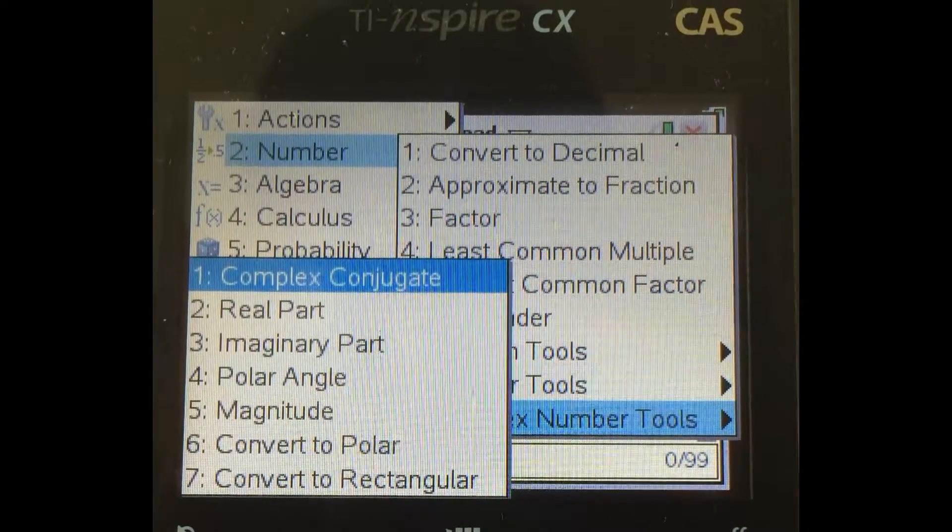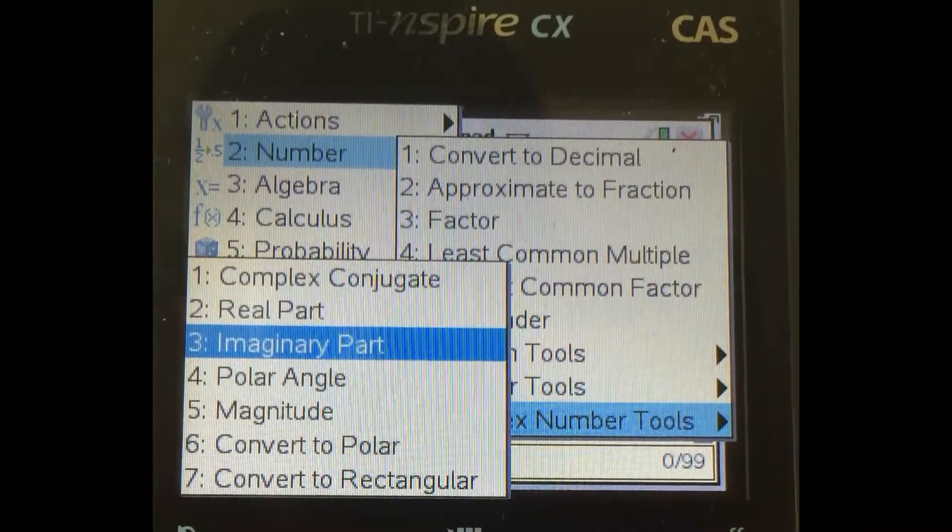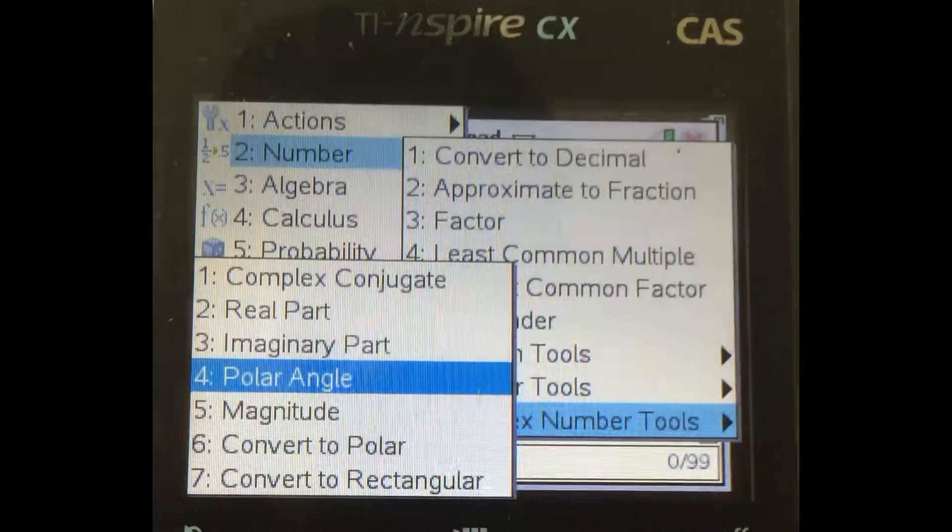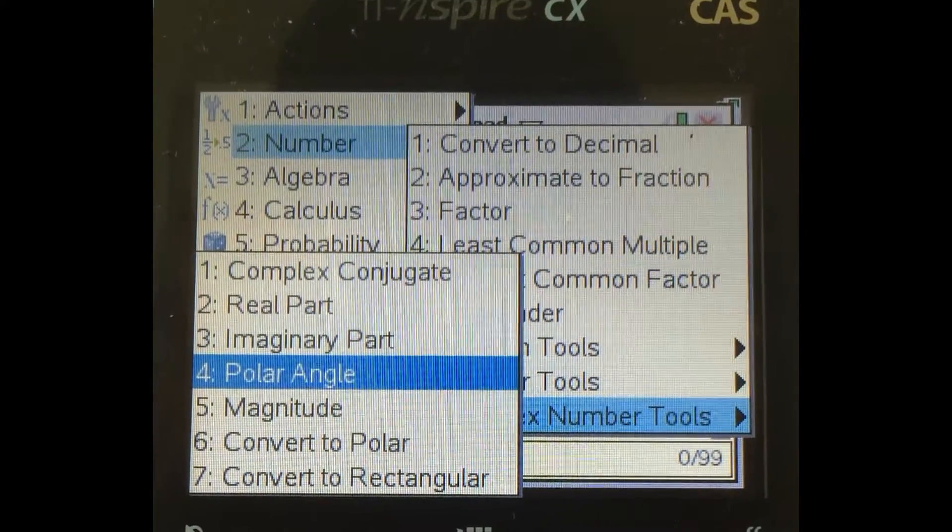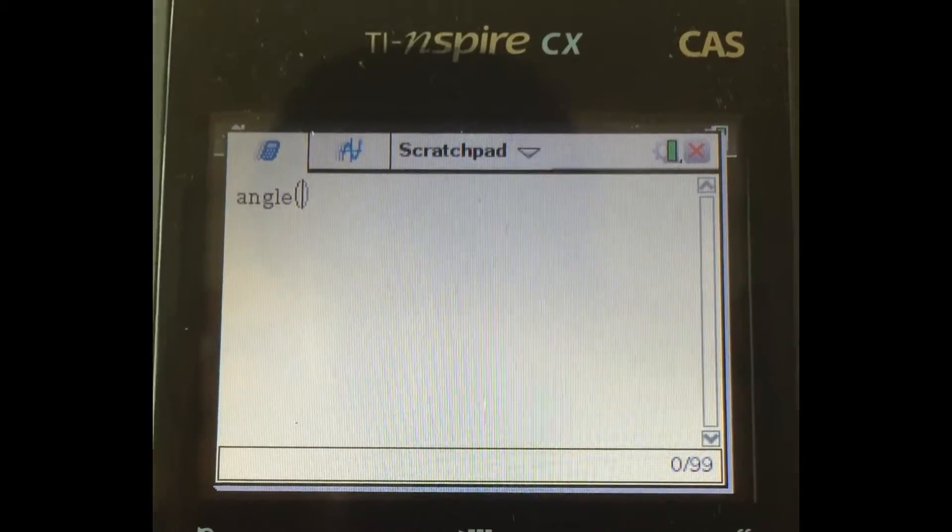You can do things like conjugate, which is completely useless. Why would you need a calculator to tell you the conjugate of something? The real part, the imaginary part, even more useless. The polar angle, polar angle is essentially like the angle that you create when you convert to polar form.